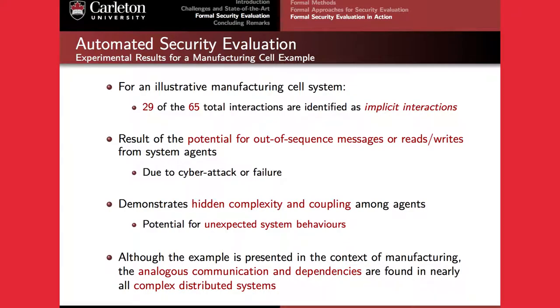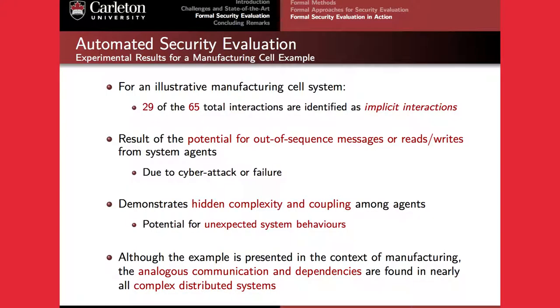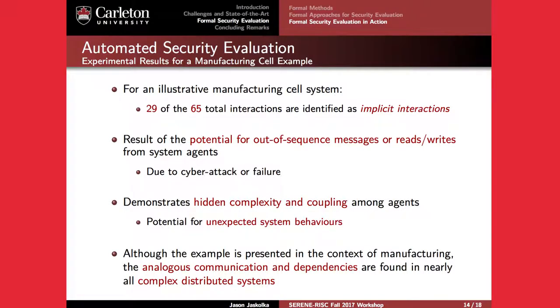We find that there's a significant fraction of interactions in a system like a simple manufacturing cell that are implicit. These result from the potential for out-of-sequence messages or reads and writes to variables by system agents — either because a cyber attack has caused one of these components to go rogue, or because of a natural failure of the system leaving it susceptible to exploit. In doing this work, we demonstrate that there's a lot of hidden complexity and coupling amongst the agents of the system, which leads to the potential for unexpected system behaviors. While this example is presented in the context of a manufacturing cell, analogous communication and dependencies are found in nearly all complex distributed systems.